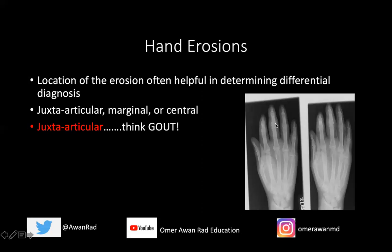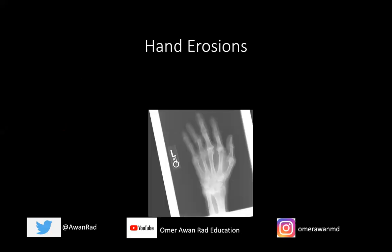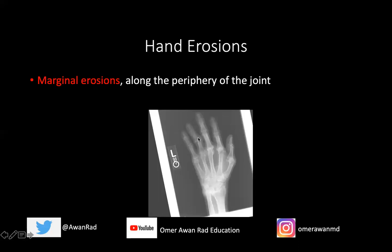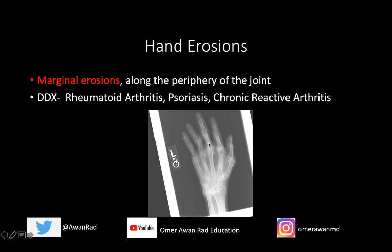A marginal erosion is along the periphery of the joint — along the edge of the joint, not right outside it like a juxta-articular, but at the bare ends of the joint. The differential for this would be rheumatoid arthritis, psoriatic arthritis, and chronic reactive arthritis. Rheumatoid arthritis is the prototypical type of marginal erosion, where you get loss of bone along the periphery due to pannus formation — an inflammatory reaction along the periphery where the joint is not protected by hyaline articular cartilage, so it preferentially destroys that part. Psoriatic and chronic reactive arthritis should also be considered with marginal erosions.